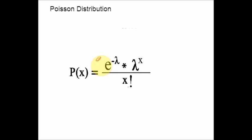The Poisson Distribution is a discrete probability distribution for the counts of events that occur randomly in a given interval of time.